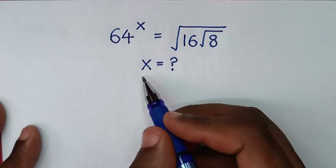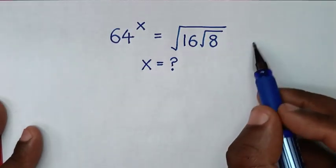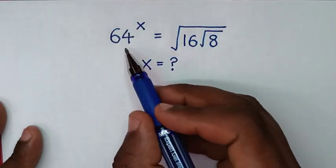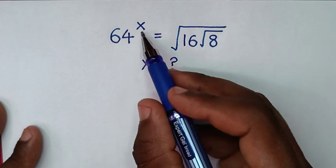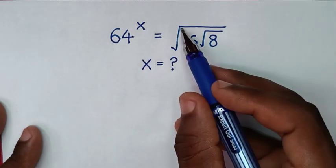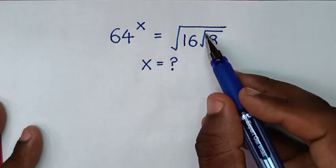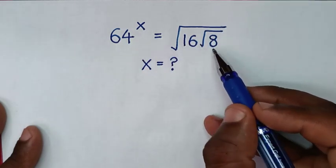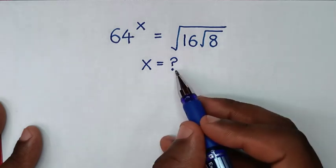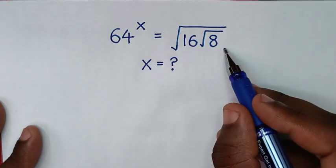Hello, you are welcome to solve this math problem: 64 power of x is equal to the square root of 16 under the square root of 8. We need to find the value of x from this equation.